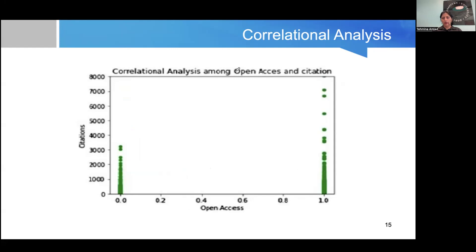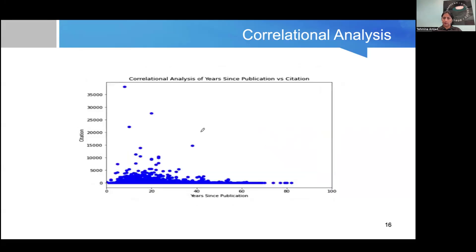When we talk about open access — papers which are not open access versus papers which are open access (coded as 0 and 1, i.e., freely available or not) — you can clearly see a difference: open access articles include several papers with a very high number of received citations.